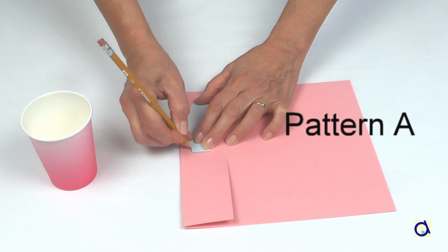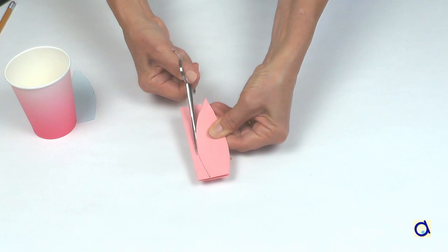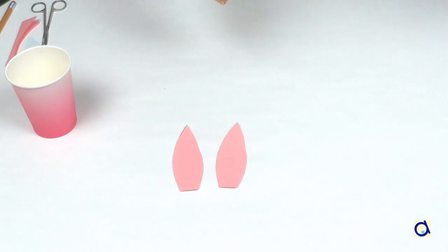Fold part of one of the sheets of construction paper. Take the pattern A, draw the outline of the pattern with a pencil, and then cut out both layers of construction paper. You will get two ears.